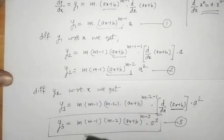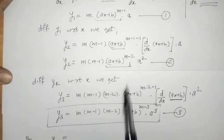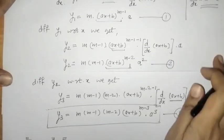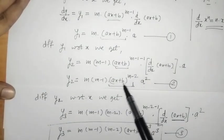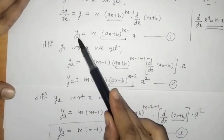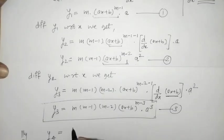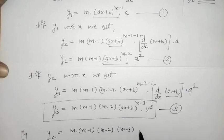By checking the pattern in y1, y2, y3, we can write y4. In y2 we have m(m−1), in y3 we have m(m−1)(m−2). Check the power of (ax + b): in y1 it is (m−1), in y2 it is (m−2), in y3 it is (m−3). And for a: in y1 we have a, in y2 we have a squared, in y3 we have a cubed. So y4 = m(m−1)(m−2)(m−3)·(ax+b)^(m−4)·a⁴.